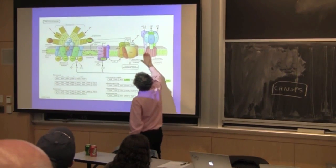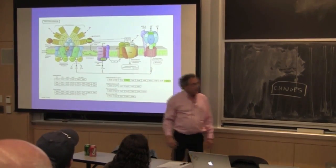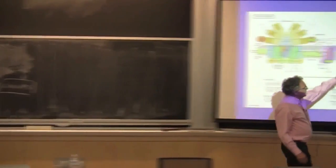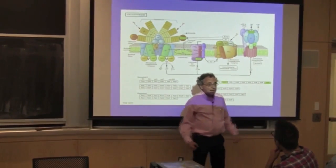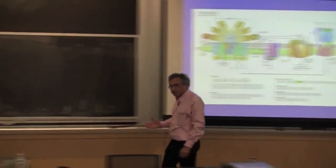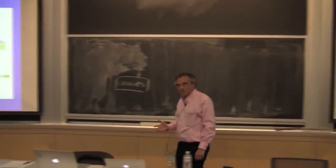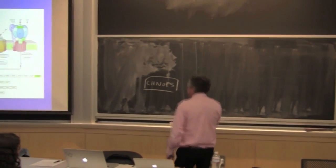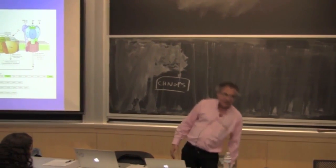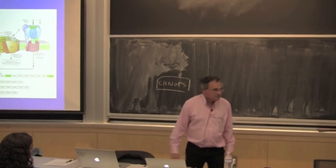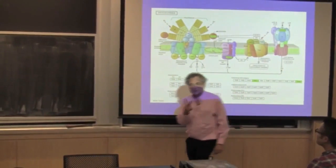It's turning. There's another series of proteins that comes down the side of the head — called a stator — and it prevents the top from turning. As this machine turns around on the bottom, the head group is wobbling. Every 120 degrees of turn, an ATP is formed.